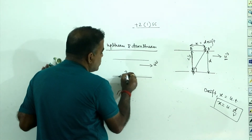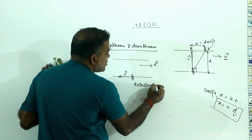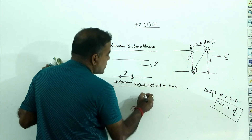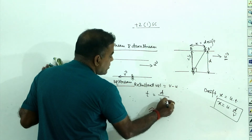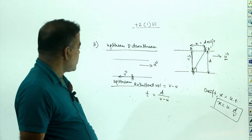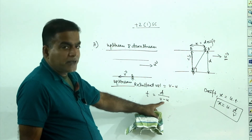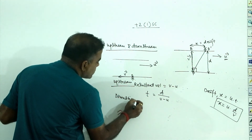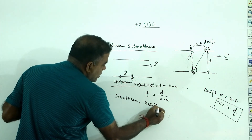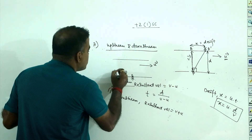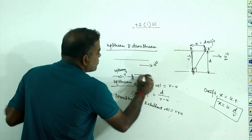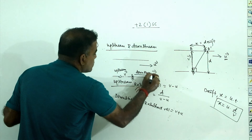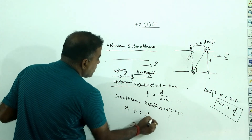When going downstream, the stream adds to the swimmer's speed, so the resultant velocity is v plus u. The time taken is the distance divided by the resultant velocity. When going upstream, the resultant velocity is v minus u. So the time t equals d divided by v plus u for downstream.